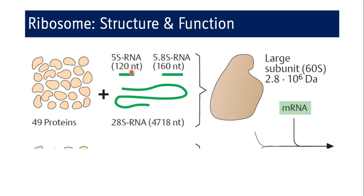5S rRNA is the smallest rRNA in the ribosomal structure, with 120 nucleotide base pairs. 5.8S rRNA has 160 nucleotide base pairs, and 28S rRNA has 4,718 base pairs. Only 28S rRNA has peptidyl transferase activity, acting as a ribozyme and being a component of the large subunit. Together, 49 proteins and these three rRNAs — 5S, 5.8S, and 28S — comprise the large subunit, with a molecular weight of 2.8 × 10⁶ daltons.